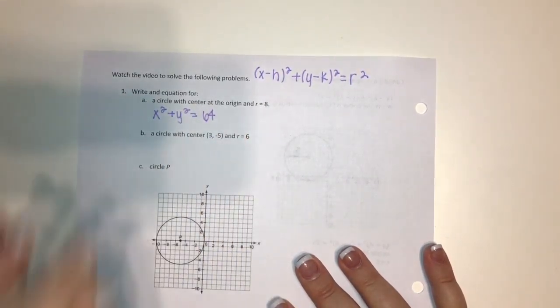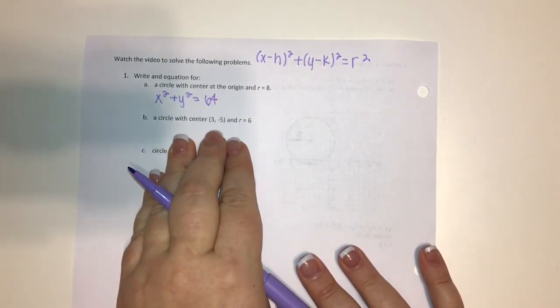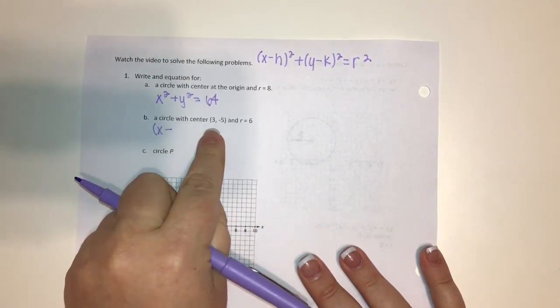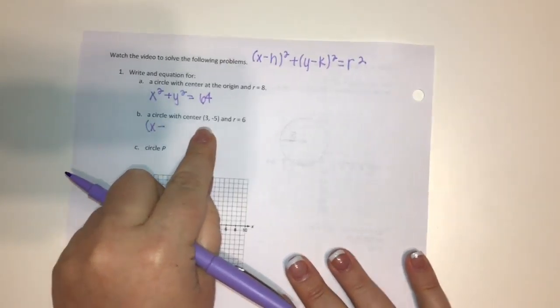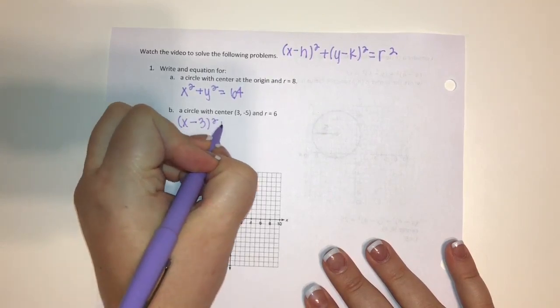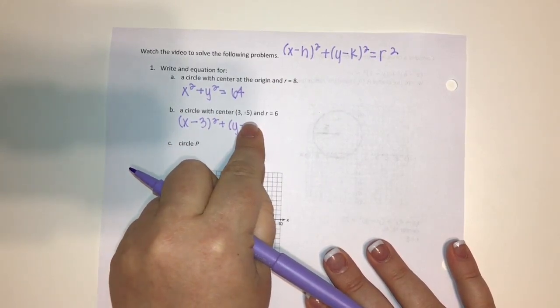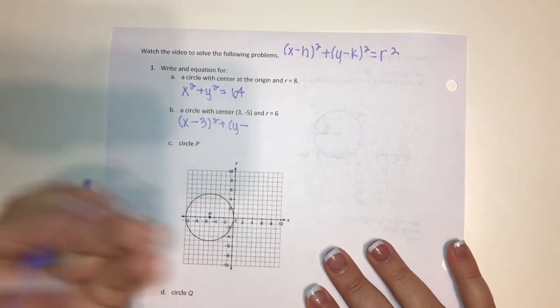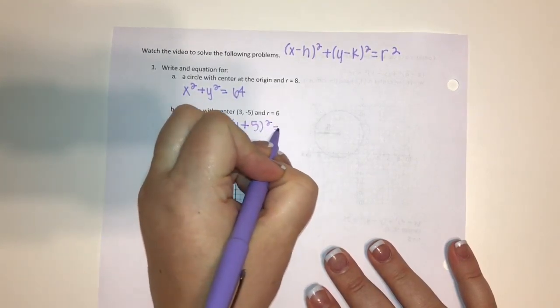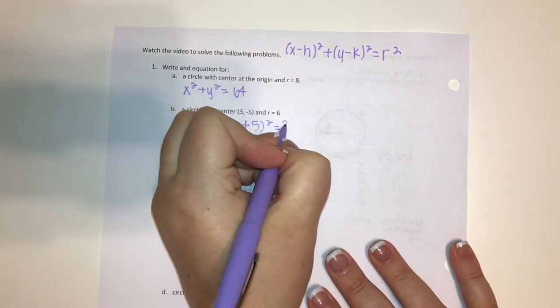Part b is a little more complicated because we have a center. We're just going to plug these numbers in. We have x minus h, which is the x of my coordinate, so it would be 3, giving us (x - 3)². Plus y minus my y part, which is -5. When we subtract a negative it becomes a positive, so it's (y + 5)². That equals my radius squared, which is 6² = 36.